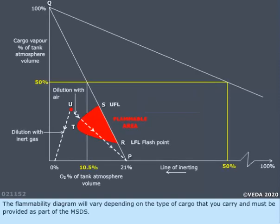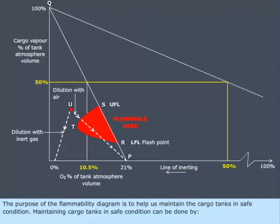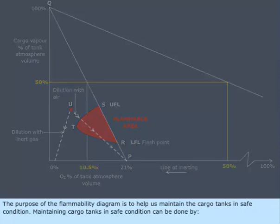The flammability diagram will vary depending on the type of cargo that you carry and must be provided as part of the MSDS. The purpose of the flammability diagram is to help us maintain the cargo tanks in safe condition.